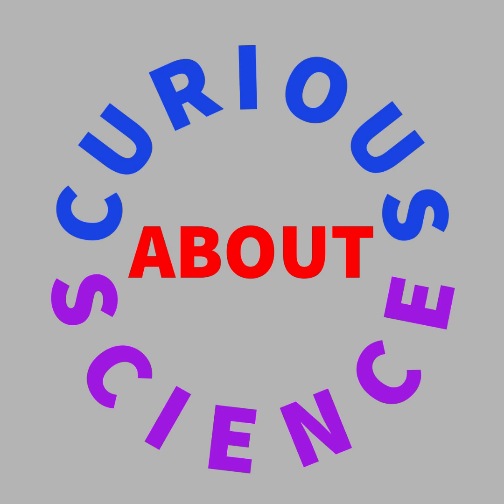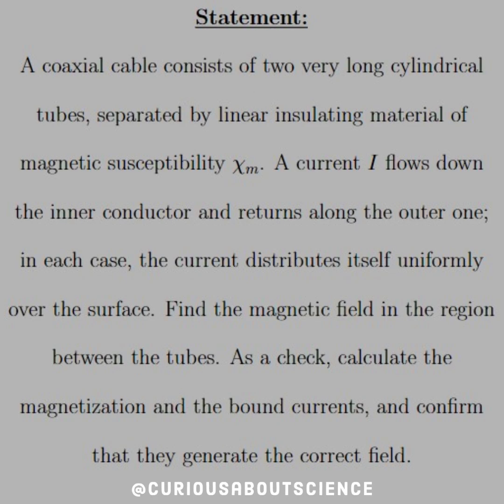Okay, so our statement today reads: a coaxial cable consists of two very long cylindrical tubes separated by a linear insulating material of magnetic susceptibility chi-m.